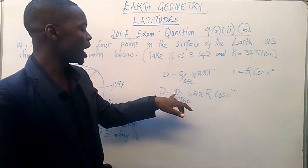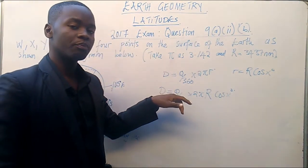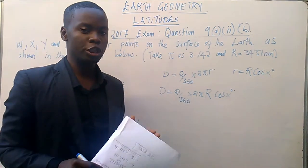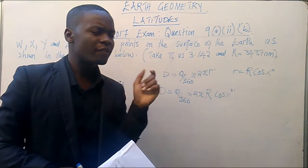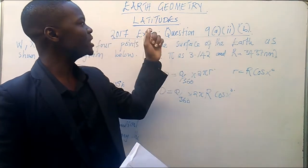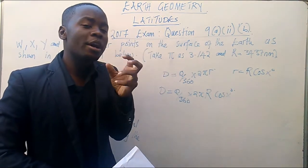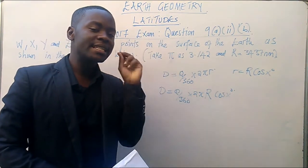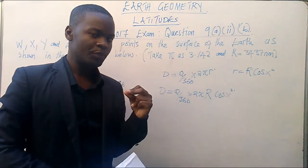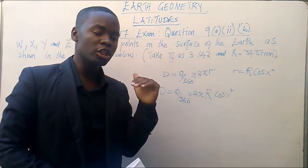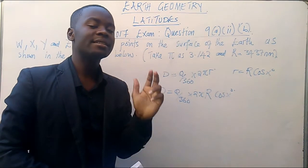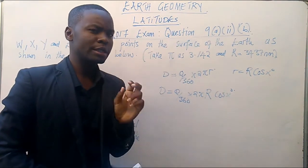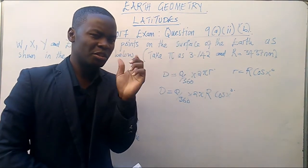Where this theta now, this theta is the difference in longitude. Remember that when we are calculating the value of theta on the study of longitude, we are saying that theta is the difference in longitude. Now, at this stage, when you are dealing with the longitude, theta is the difference in longitude. Please note that differences which are there.